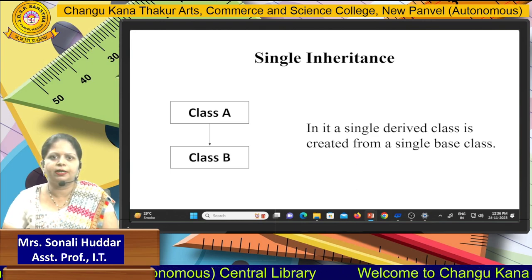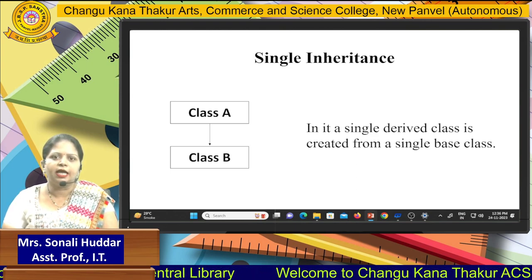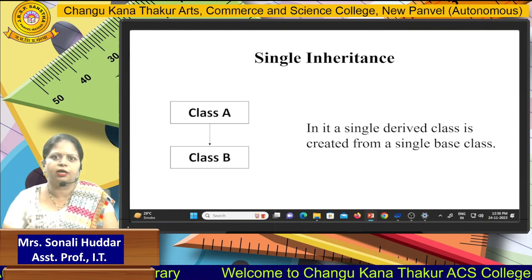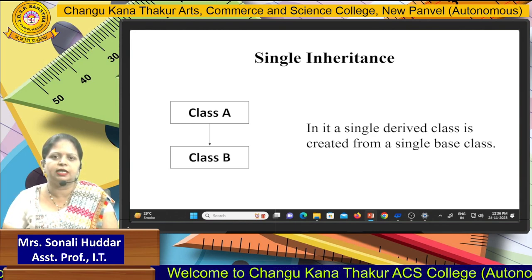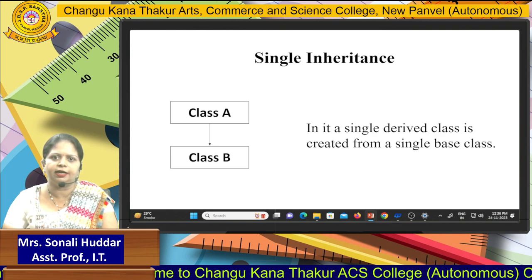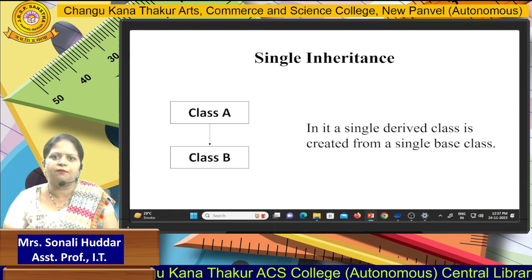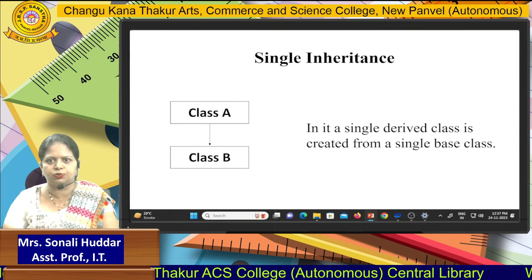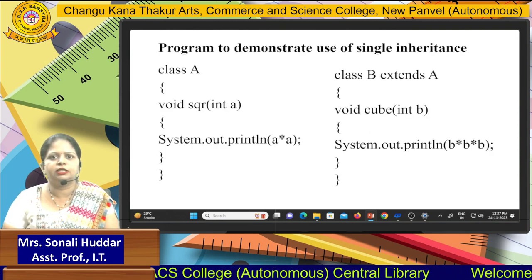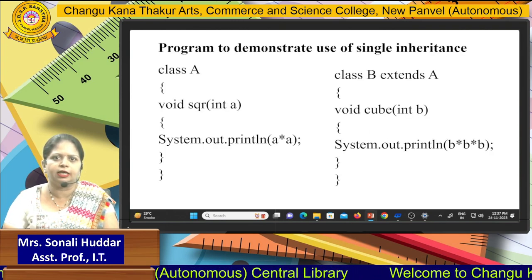All the properties of the base class are going to be inherited in the child class. So whatever properties class A has, those are going to be inherited in class B. Along with that, class B also has its own properties. Now let's consider the program that demonstrates single inheritance.